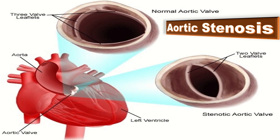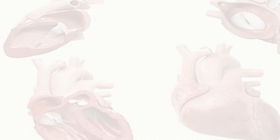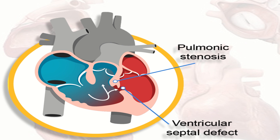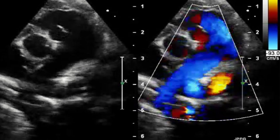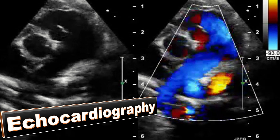This is the ventricular septal defect — a defect between the two ventricles. Here we can also see pulmonary stenosis. Every cardiac abnormality should be confirmed by an echocardiogram, preferably performed by a pediatric cardiologist or fetal medicine consultant.